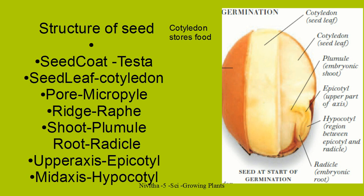These are the most important parts of a seed. There are pores on the seed coat — through these pores the seeds breathe, and when soaked in water, the water is absorbed by the seed through those pores. There are ridges also on the seed called raphae. There is also an epicotyl and hypocotyl — epicotyl is the upper part of the axis, and hypocotyl is the region between the epicotyl and radicle.